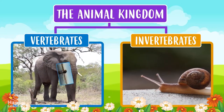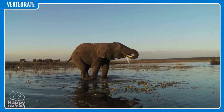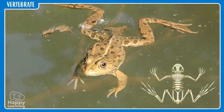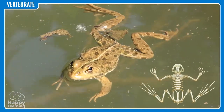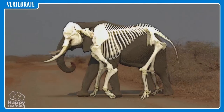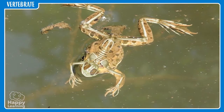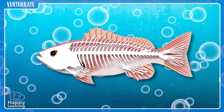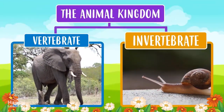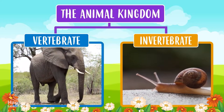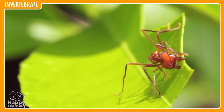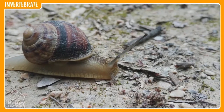Vertebrate animals, like this elephant, this parrot, or this little frog, have a skeleton — they have bones. This is the skeleton of an elephant, this is the skeleton of a frog, and this is the skeleton of a fish. Invertebrate animals, however, have no bones. They don't have an internal skeleton, like this ant or this slow snail.